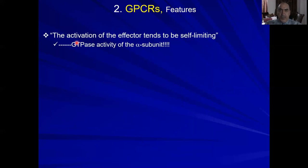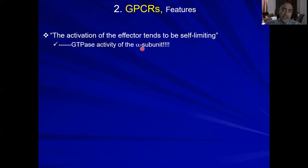Some interesting features of G-protein coupled receptors: first, the activation of the effector tends to be self-limited. The alpha subunit's GTPase activity acts as a brake on G-protein activity. For example, adrenaline binding to a beta receptor in the heart increases heart rate, but this cannot go on indefinitely — the GTPase activity of the alpha subunit provides the necessary brake.